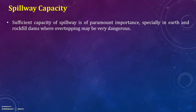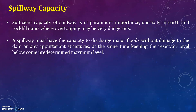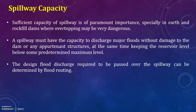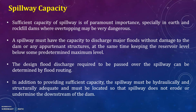Regarding spillway capacity, sufficient capacity is of paramount importance, especially in earth and rock-filled dams where overtopping may be very dangerous. A spillway must have the capacity to discharge major floods without damage to the dam or any operating structures, while keeping the reservoir level below some predetermined maximum level. The desired flood discharge required to be passed over the spillway can be determined by flood routing. In addition to sufficient capacity, the spillway must be hydraulically and structurally adequate and must not erode or undermine the downstream side of the dam.